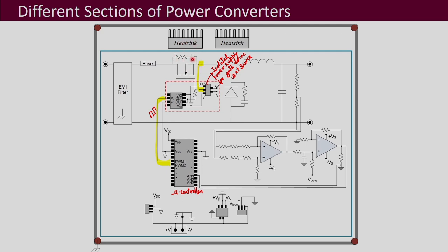Further, what we see here are snubbers — simple RC snubbers are chosen here for the MOSFET, and also an RC snubber for the diode. We also see heat sinks: one heat sink is for the MOSFET and another is for the diode. There is also an EMI filter connected at the input of this buck converter to stop the generated EMI from going back to the source.